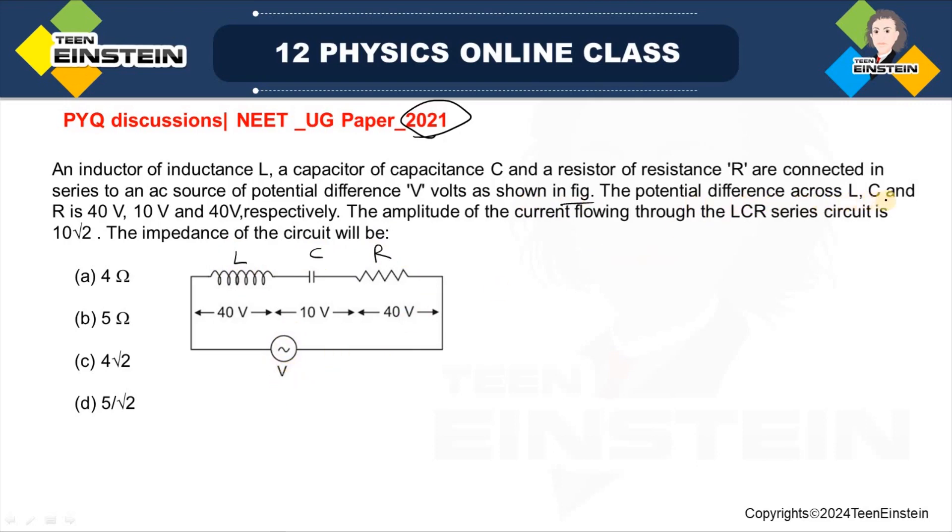The potential difference across L, C and R is 40 volts, 10 volts and 40 volts respectively. That means, you have been given VL is equal to 40 volts, VC is equal to 10 volts and VR is equal to 40 volts again.